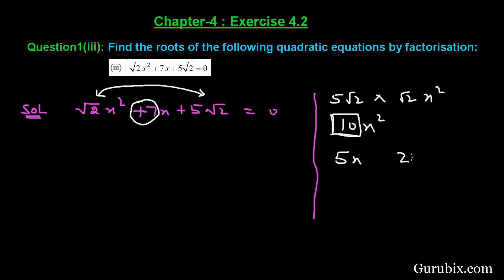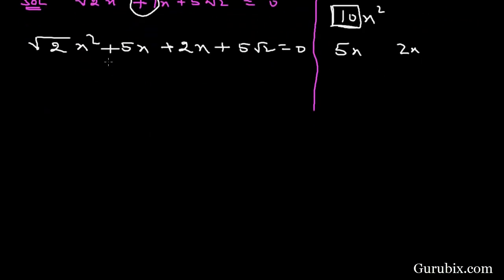Then we have split the middle term in two parts and the parts are 5x + 2x. Here we have √2x² + 5x + 2x + 5√2 = 0.